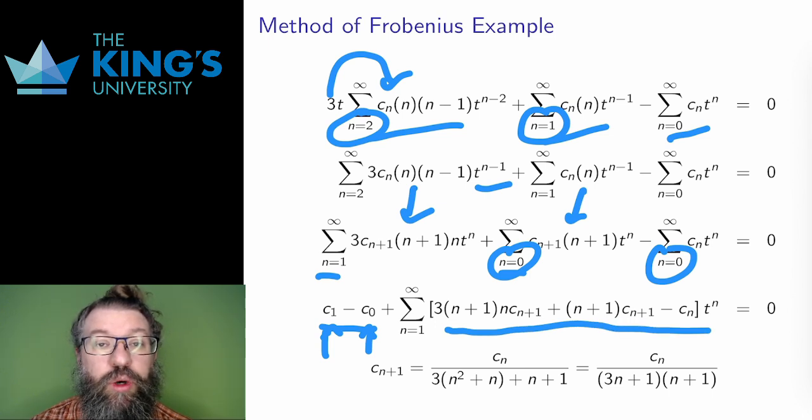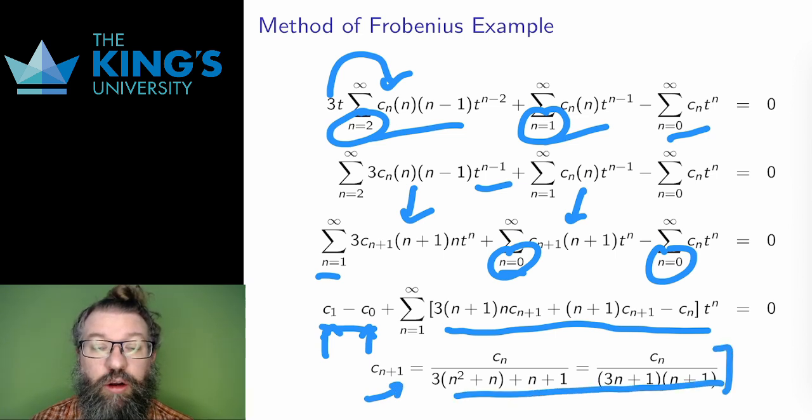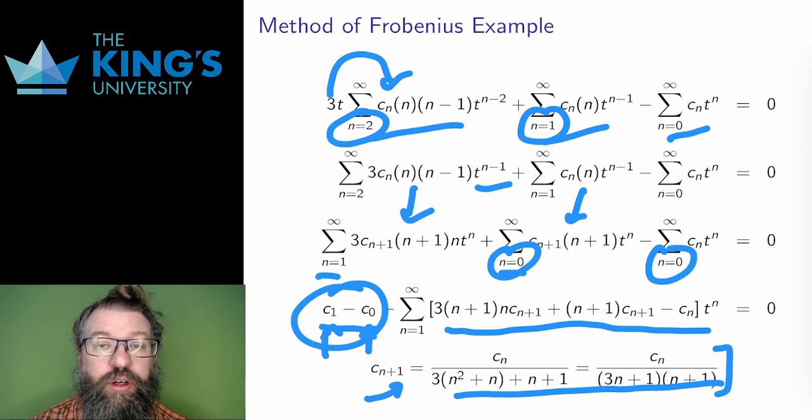Solve for cₙ₊₁ and simplify the denominator a bit to get the recurrence relation. And I remember that I also have c₁ minus c₀ equals 0 from the two terms that I pulled out.